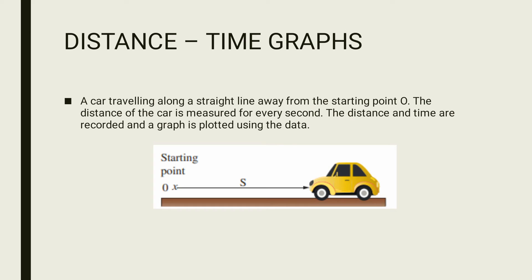First, distance versus time graph. For this, assume a car traveling in a straight line and away from the starting point O. The distance of the car is measured for every second. The distance and time are recorded and according to the data a graph is plotted. Come, we will analyze the graph.